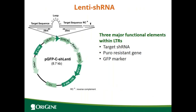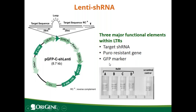For lenti shRNA, between the LTRs there are three functional elements: the shRNA under U6 promoter, a puromycin selection marker under SV40, and GFP under CMV. Therefore, your transduced cells will express your target shRNA, will be resistant to puromycin selection, and your cells will be green. The shRNA is offered as a kit; in each kit there are five constructs — one scramble control and four gene-specific shRNAs. We offer a performance guarantee that at least one out of the four shRNAs will give you 70 percent knockdown.